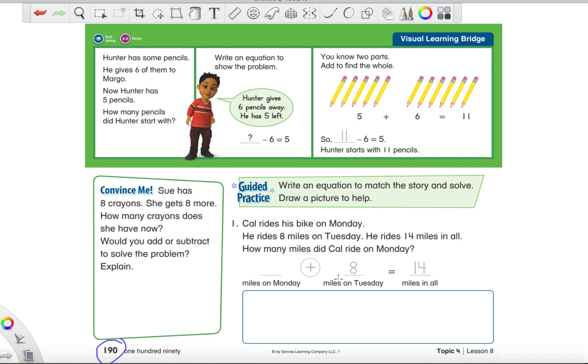Especially since they set this up differently than I would have, and I want to make sure no one is confused. We're going to do number one in parts. We're going to start off doing it together a little bit. And then I'm going to leave you guys to finish this on your own at a certain point. But I'll let you know when that happens. Let's read it together. Cal rides his bike on Monday. He rides 8 miles on Tuesday. So now we know how many miles he rode on Tuesday. We need to circle 8.